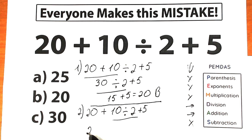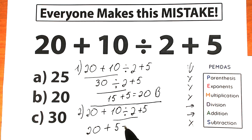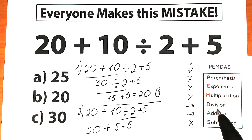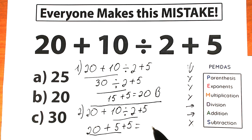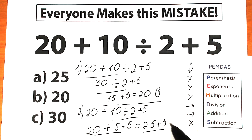We divide 10 by 2, which equals 5, completing our first step. Next step is addition, going from left to right. We have 20 plus 5 plus 5, and our last step is addition, which equals 30. This is our answer — Option C.